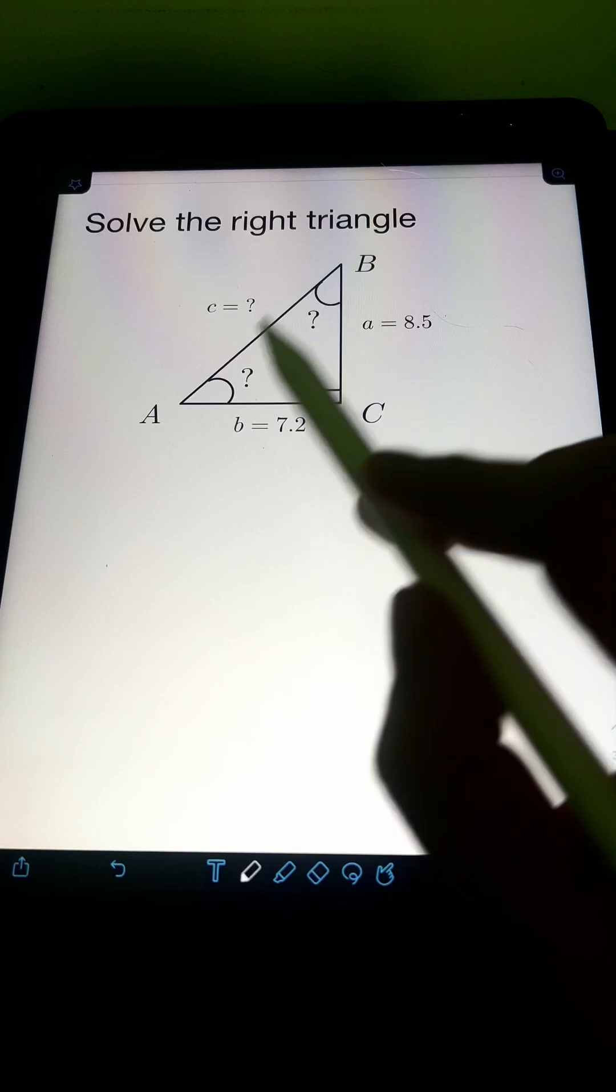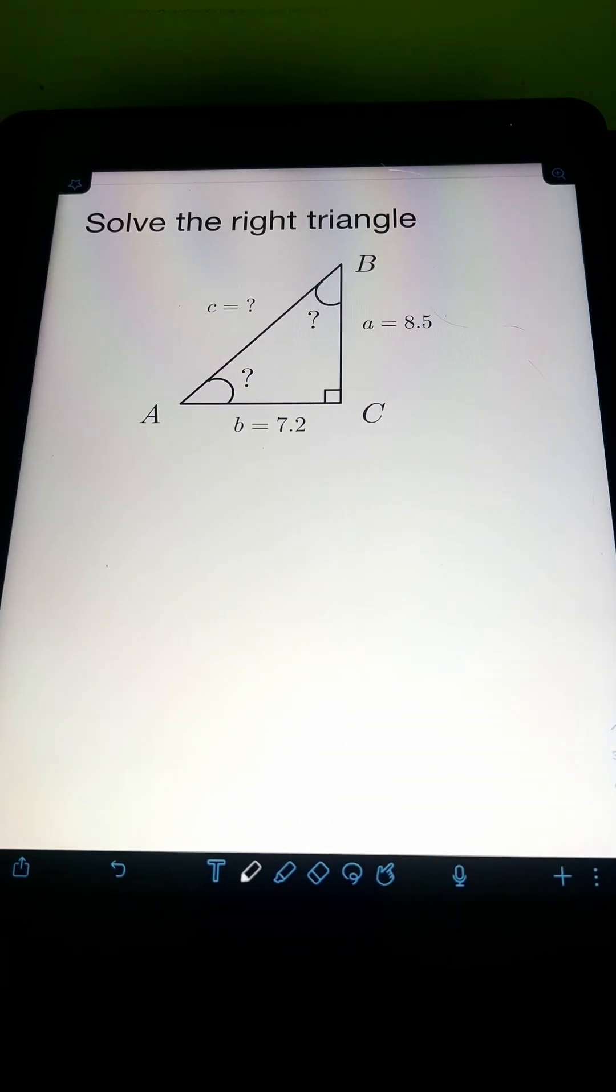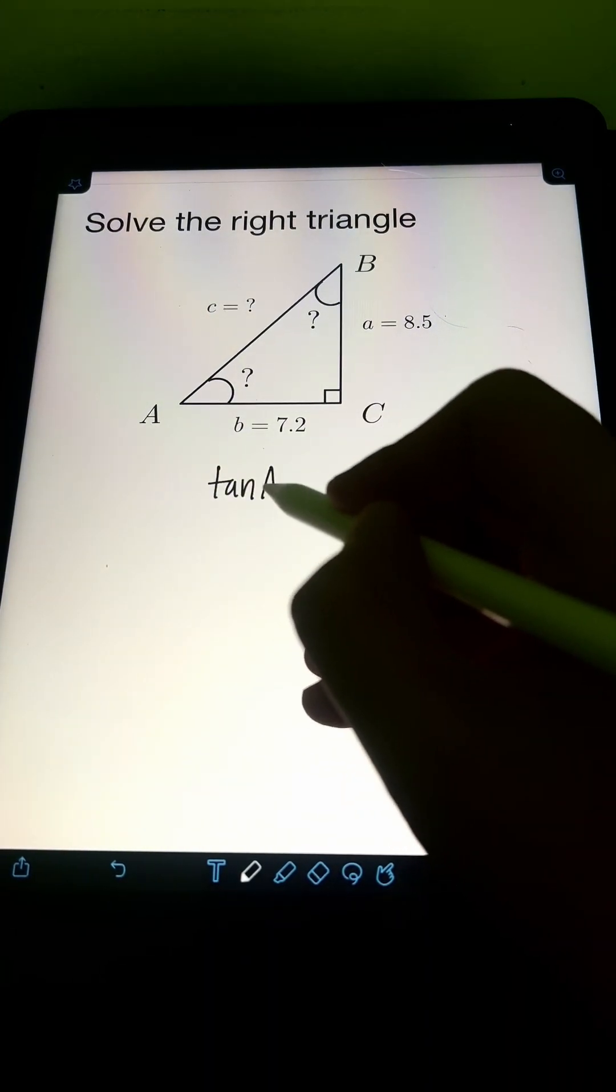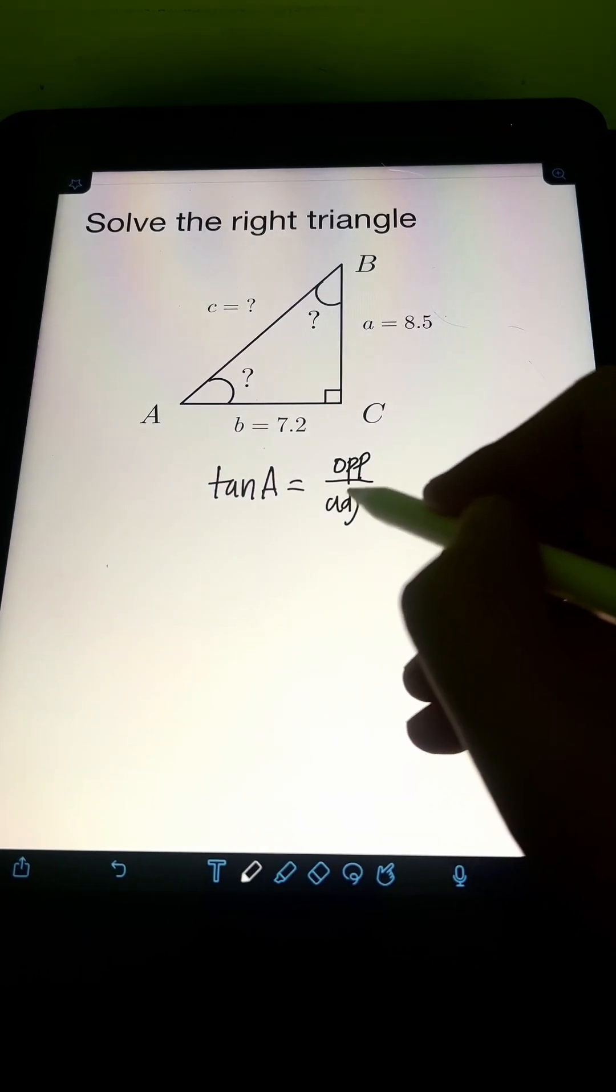To find any of the unknown angles A or B, let's say for A, we can use trigonometric ratio which is the tangent ratio. So for the tangent of A, it's equal to opposite over adjacent side.